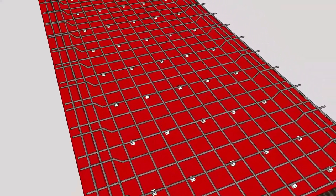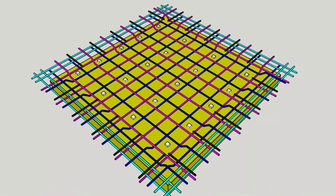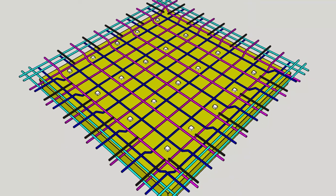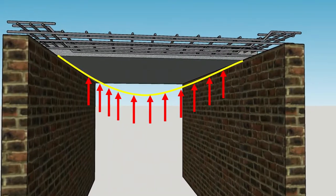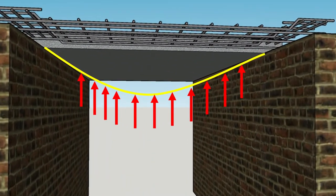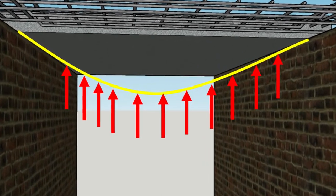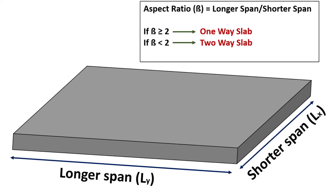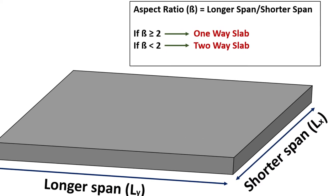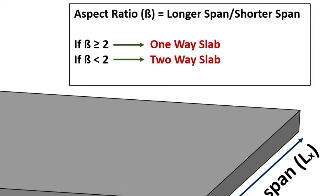One-way slabs are different from two-way slabs because they are supported by two opposite sides only, while two-way slabs are supported on all four sides. This means that one-way slabs resist bending in one direction while two-way slabs resist bending in both directions. The aspect ratio — ratio of longer span to shorter span — shall be greater than or equal to 2 for one-way slabs; if less than 2, it is called a two-way slab.